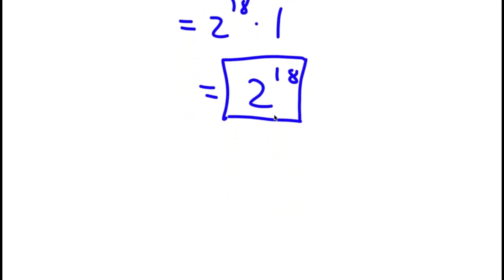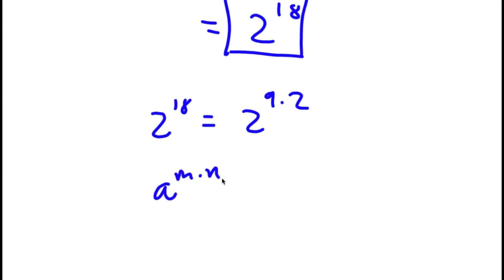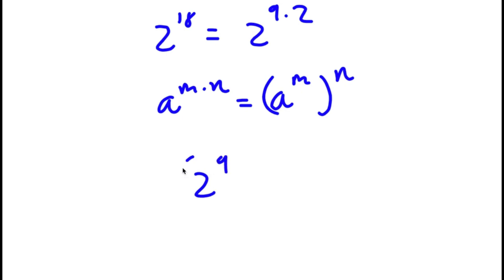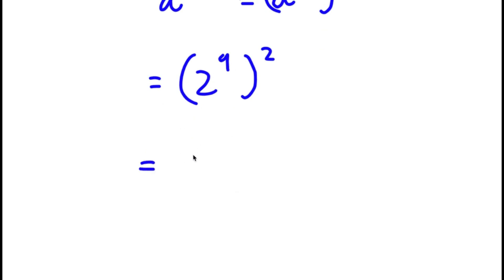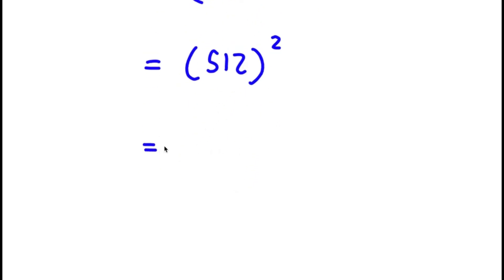Although 2 to the power of 18 is a solution, I'm going to simplify this further. 2 to the power of 18 is the same thing as 2 to the power of 9 times 2. Using the property that a to the power of m times n equals a to the power of m to the power of n, 2 to the power of 9 times 2 becomes 2 to the power of 9 to the power of 2. Now, 2 to the power of 9 equals 512, so I have 512 to the power of 2.